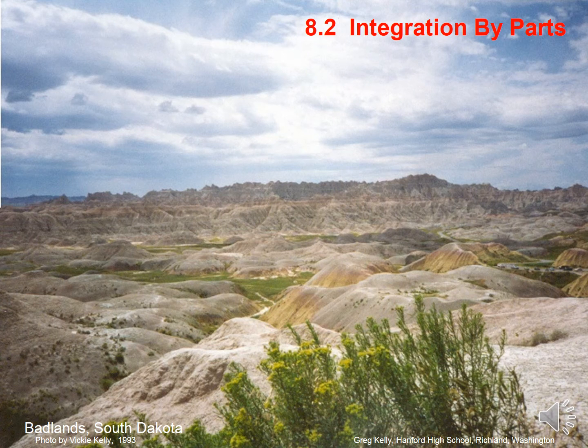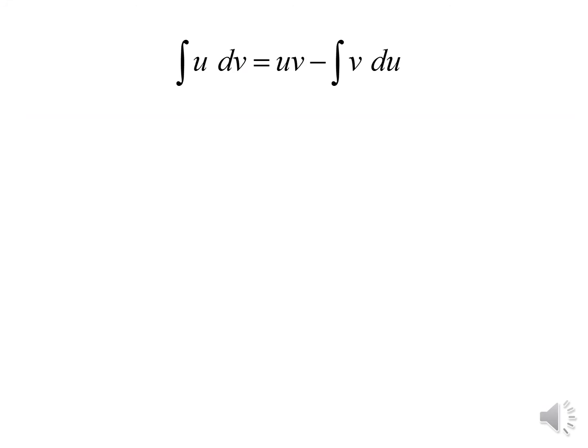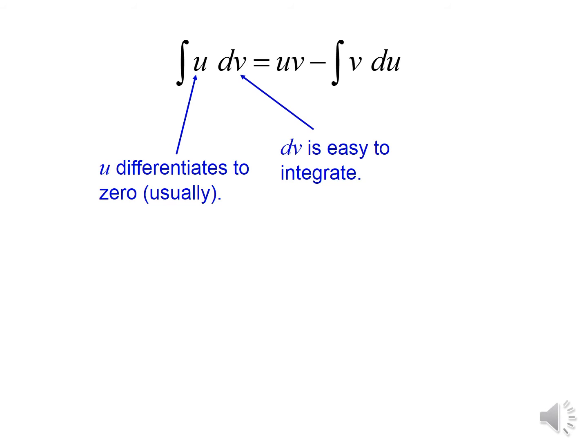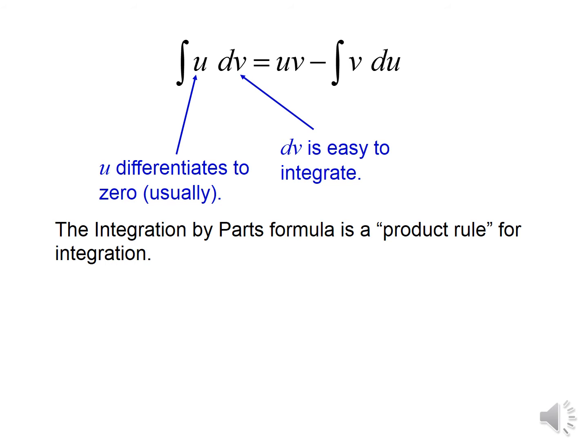We're going to pick up from where we left off with integration by parts in the classroom. Just to recall, we're going to use the formula: integral of U dV equals UV minus integral of V dU. When choosing U, we want something that differentiates easily, and dV to be something that integrates easily. Remember, this is the product rule for integration.